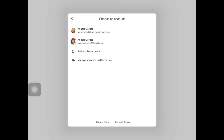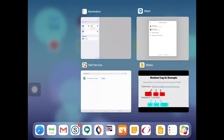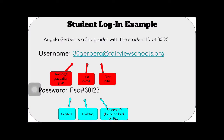If it does not recognize your Google account when you sign in, you are going to want to follow this example here. So say for example that I was a third grade student and my ID was 30123 — just as an example — my username would be 30gerbera at fairviewschools.org. You can see it starts with that two-digit graduation year, then my last name and first initial. The password is capital F, lowercase sd, hashtag, and then your student ID. That student ID can actually be found on the back of the iPad — it's on a white piece of paper that has the student name on there as well.